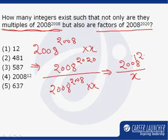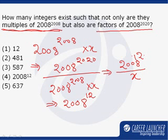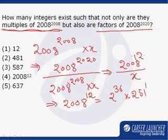So if it is divisible by x, x must be a factor of 2008 raised to power 12. On factorization, 2008 raised to power 12 is equal to 2 raised to power 36 into 251 raised to power 12.